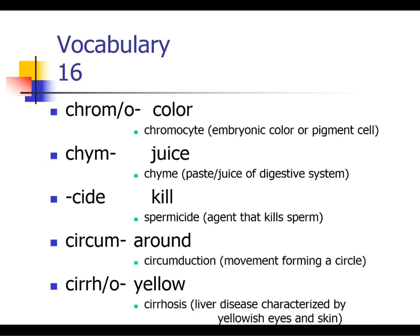'Chyme' — when you consume food, the stomach breaks it down into a pasty liquid-like substance called chyme or juice. 'Cide' means to kill — spermicide, homicide. 'Circum' means around — circumnavigate, circumduction. 'Cirro' — if you have cirrhosis of the liver, it can cause a yellowing of the skin and eyes; cirro means yellow. You're going to make flashcards and not stress over these terms — you just need to know the term and its meaning. The examples are optional.